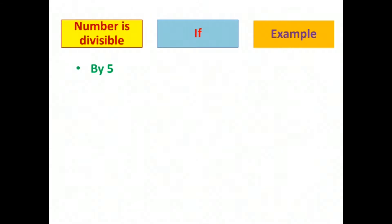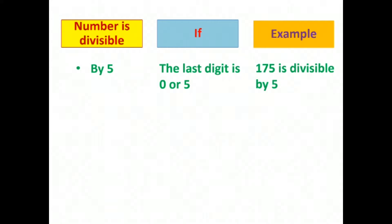Now the divisibility rule for 5. A number will be divisible by 5 only if the last digit is 0 or 5. Here see the example 175. The last digit of the number is 5, so it is divisible by 5.